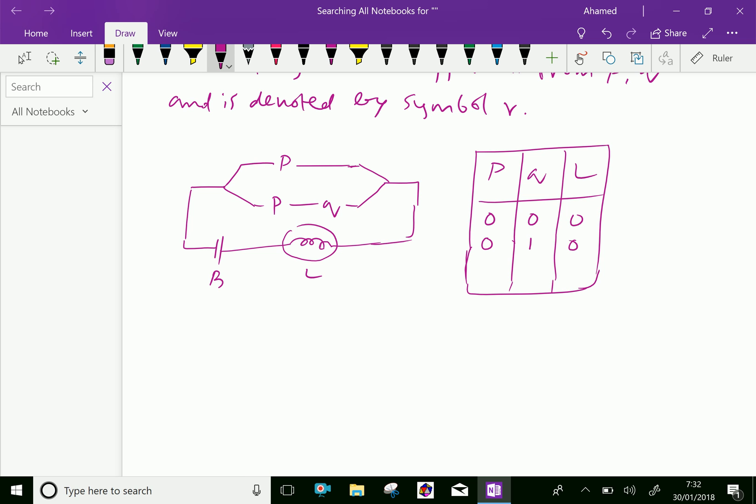When P is closed, Q is open, then current will flow through P. Therefore, the lamp is on. When P is closed, Q is also closed, still lamp will glow.